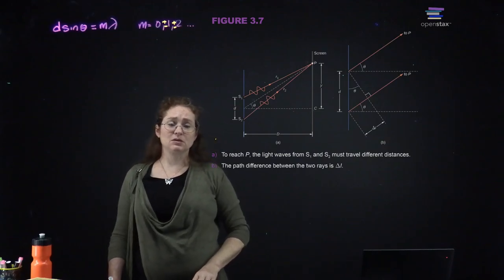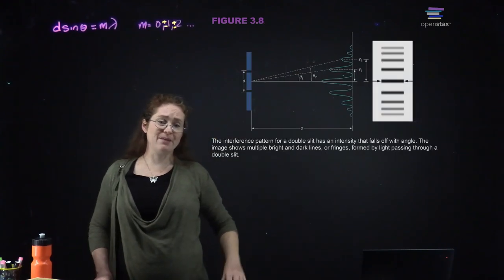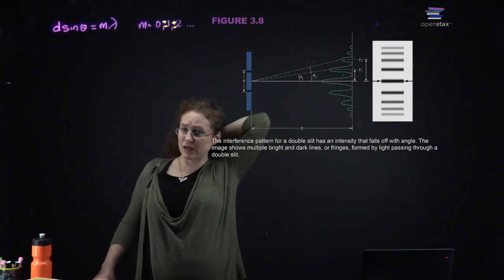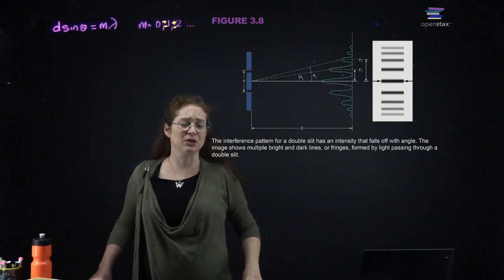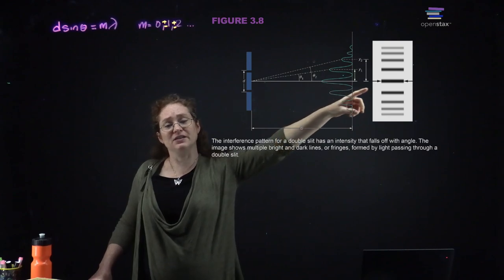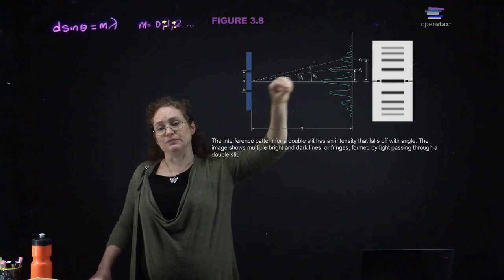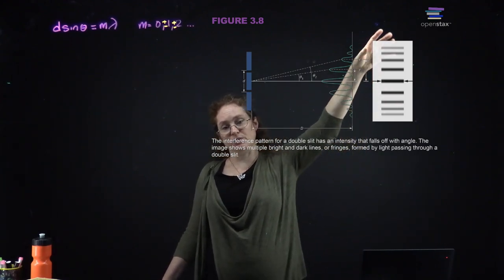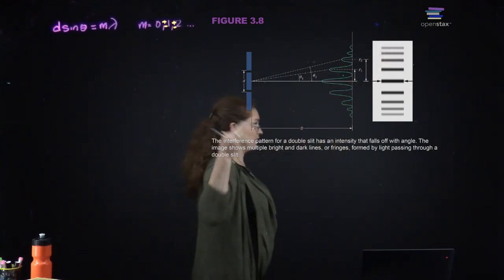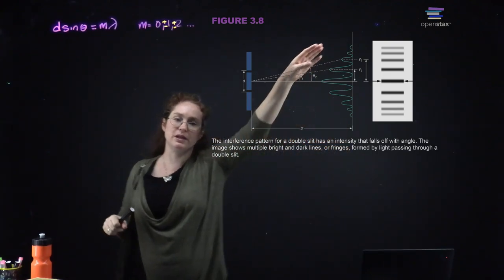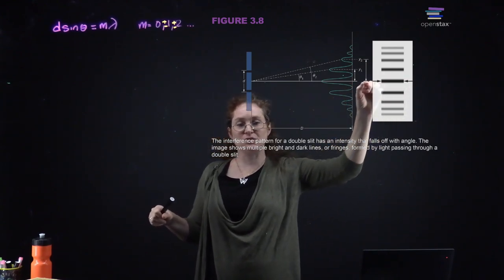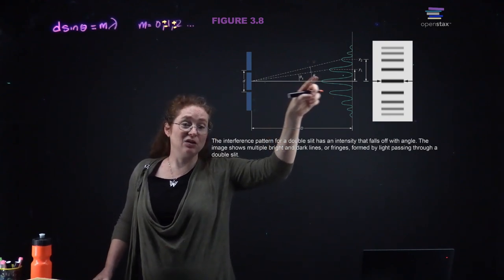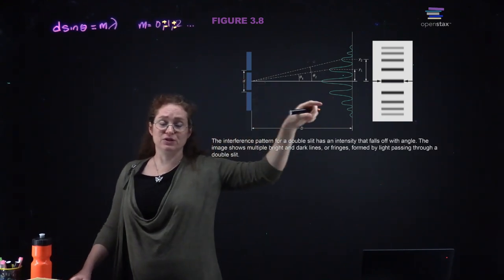On the screen, you see the amplitude as a function of position. There is a central maximum — the brightest point — and then you see fringes. Looking at the screen directly, you have a central maximum and these other bright spots called fringes. What you can directly measure is not the angle but the height of the fringes relative to the central maximum.